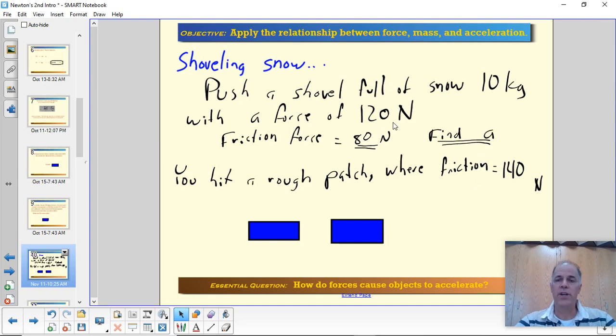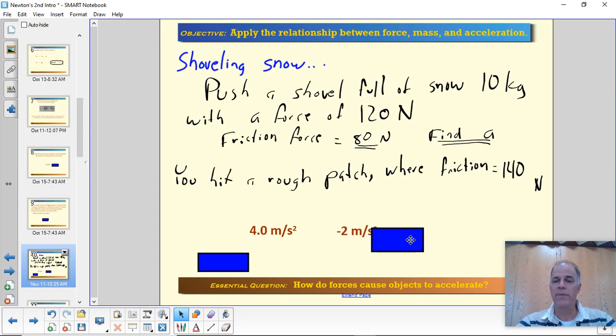So two questions: the acceleration when the friction is 80 newtons and the acceleration when the friction is 140 newtons. Do that, pause it. I'll show the answer in 3, 2, 1. Low friction, it's 4 meters per second squared that we're accelerating it because the net force is 40 newtons acting on 10 kilograms results in 4 meters per second squared. When the friction goes up, now we have a negative 20 newtons of force, meaning we're going to be slowing down. And our deceleration or our negative acceleration is going to be negative 2 meters per second squared, meaning we're slowing down. If we don't start pushing harder, that friction will stop our shovel. You probably have experienced that.